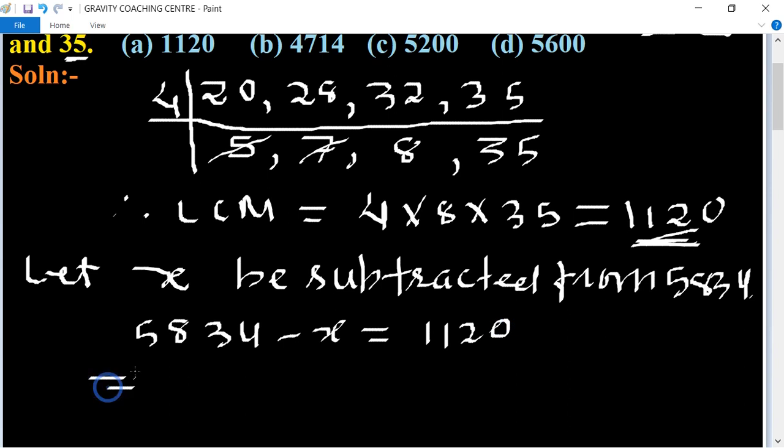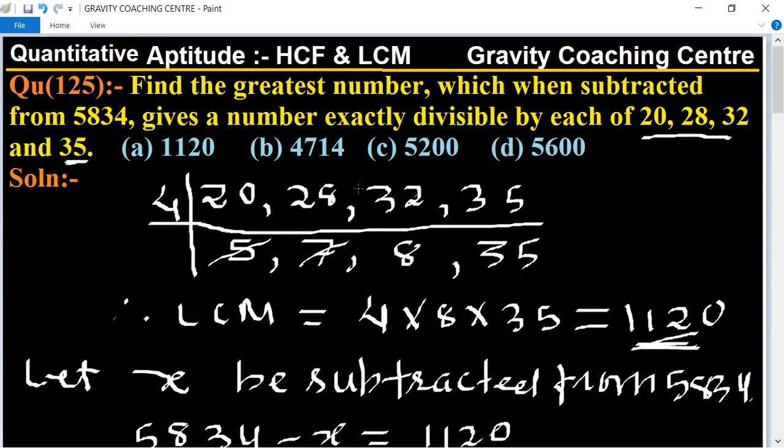This implies that x equals 5834 minus 1120, which equals 4714. This is the required answer. Option B is the correct answer.